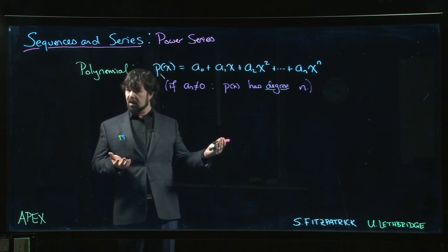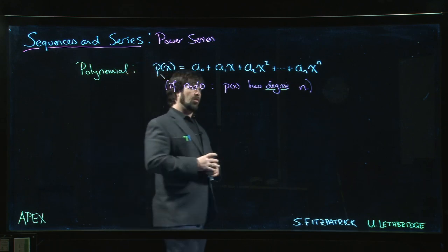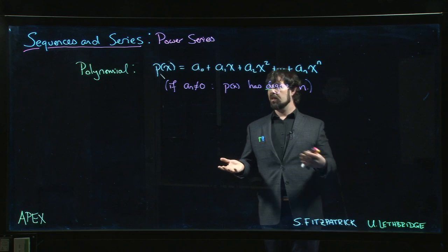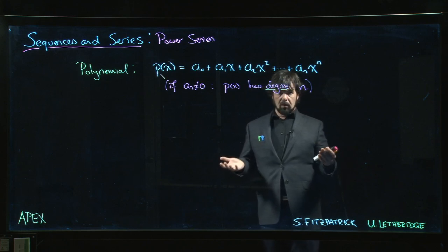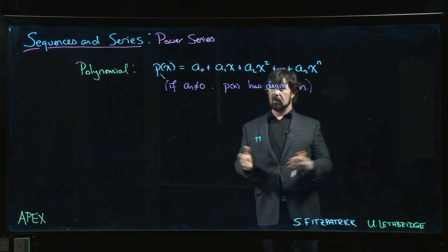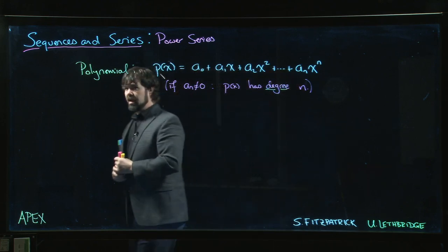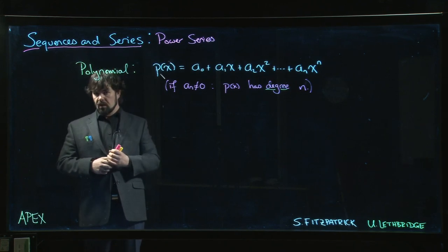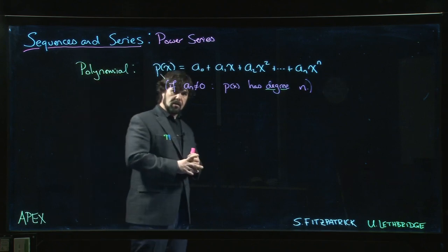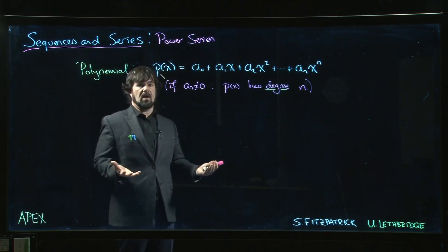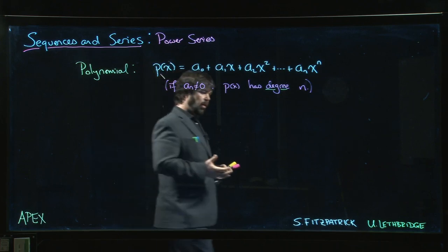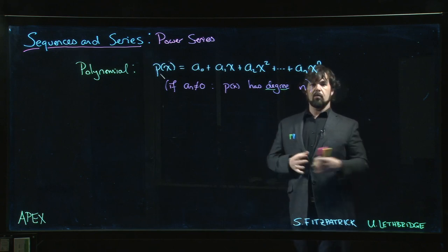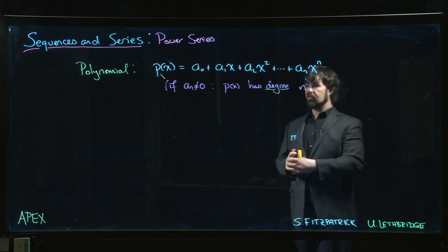We know there are a lot of functions that cannot be represented by polynomials. There's a lot of behavior we don't get from polynomials — we can't get the periodic behavior you see with sine and cosine, and we can't get asymptotes from a polynomial. Polynomials never have asymptotes, horizontal or vertical. On the other hand, functions that aren't equal to a polynomial can at least be approximated by one — that's what Taylor polynomials are about.